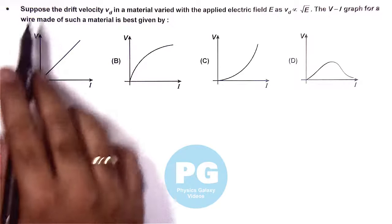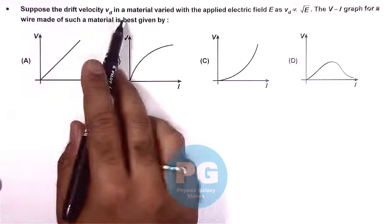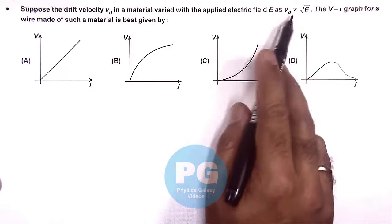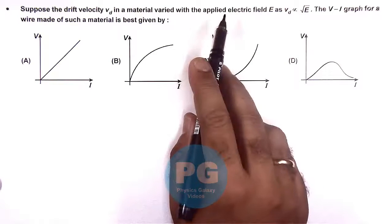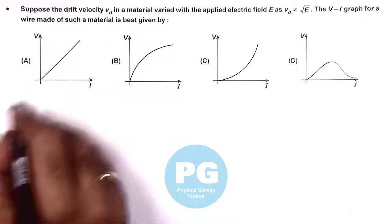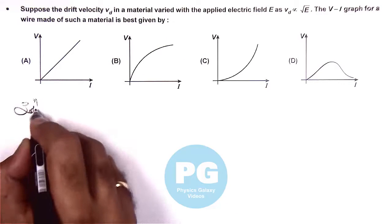In this question, we are given that suppose the drift velocity Vd in a material varied with the applied electric field as Vd is proportional to square root of electric field. Then the V-I graph for a wire made of such a material is given as, here we can directly write,